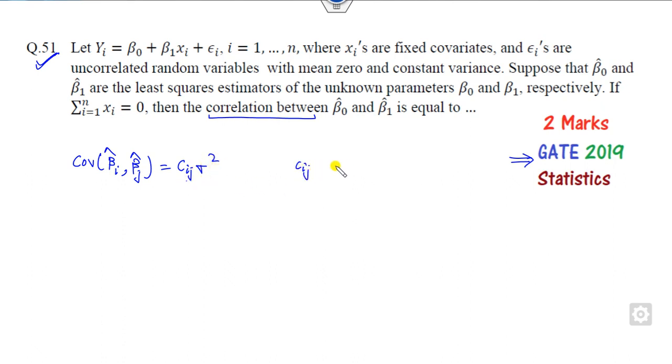c_ij is the i-th row, j-th column element of (X transpose X) inverse. In this case, we need the covariance of beta_0 and beta_1. What will happen? This will be zero, but it's not always zero.